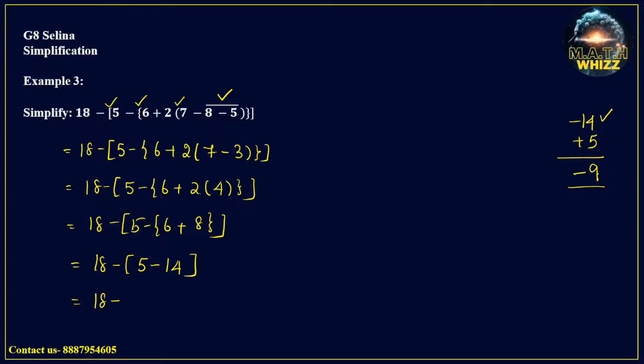So 18 minus of minus 9. Minus into minus is plus. So it becomes 18 plus 9, which is 27.